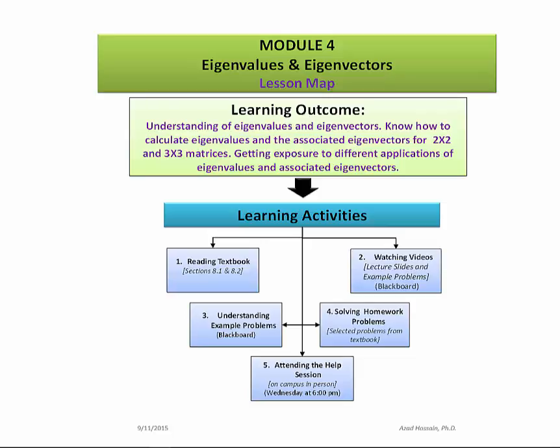Now, as we saw in the previous modules, there are 5 components of learning activities. Number 1, reading selected sections from your textbook, that is sections 8.1 and 8.2. Number 2, watching provided videos for both lecture slides and example problems.